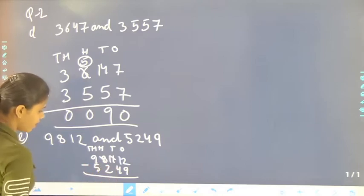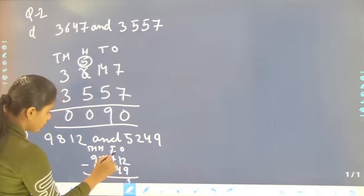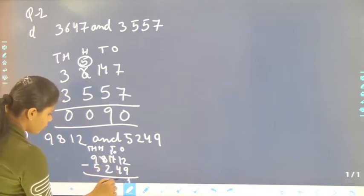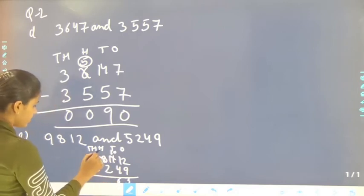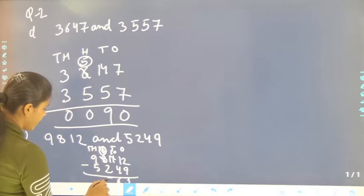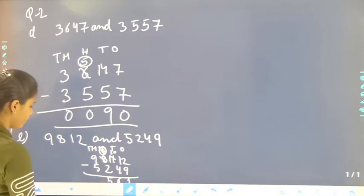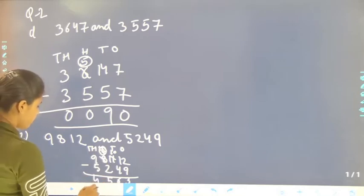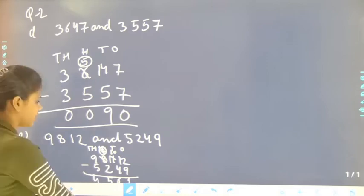We borrow from 8 — 12 minus 9, it will be 3. 10 minus 4, it will be 6. And 7 minus 2, it will be 5. And 9 minus 5, it will be 4. That is 4,563.